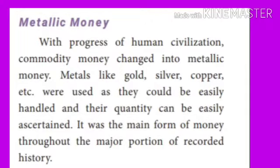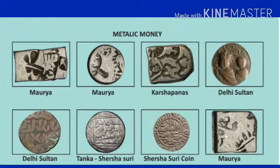Commodity money changed into metallic money. Metals like gold, silver, copper, etc. were used as they could be easily handled and their quantity could be easily ascertained. It was the main form of money throughout the major portion of recorded history.